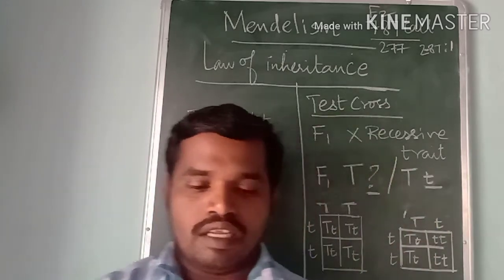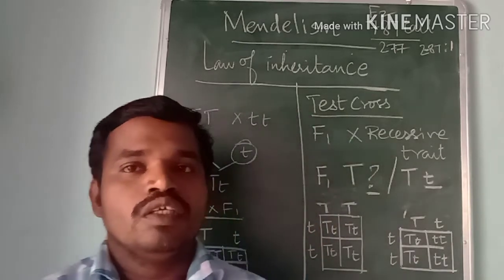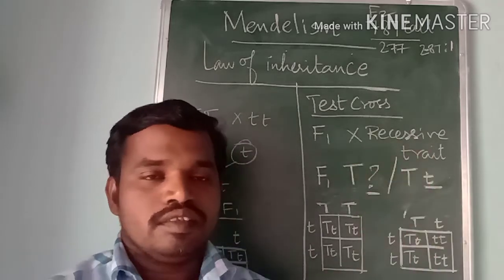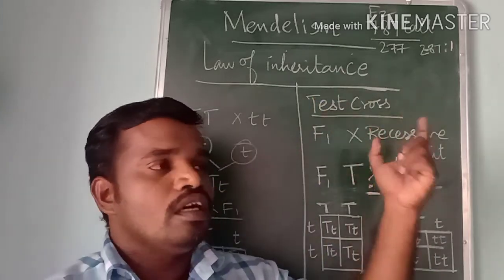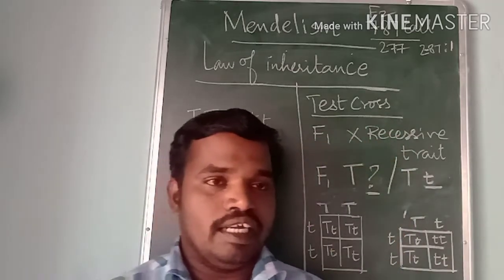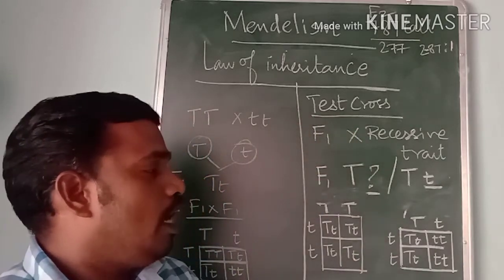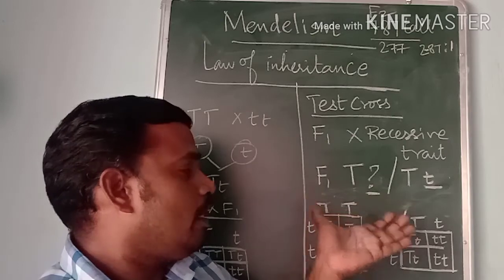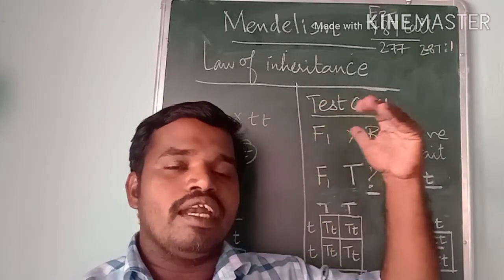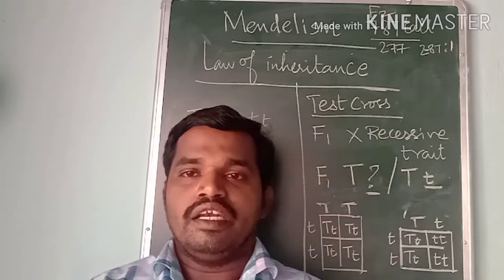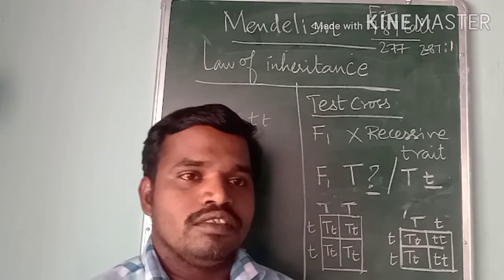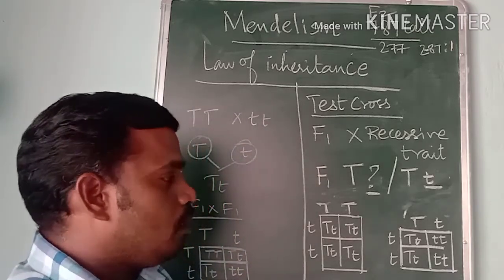When he conducted the monohybrid crossing — what is monohybrid crossing — he selected two different plants with one pair of contrasting traits. He took two different pure breeds and crossed them. At the end of the F1 generation, he was able to get only one of the traits. For example, if he took a tall plant and a dwarf plant — both pure breeds — in the F1 generation all the plants were tall.